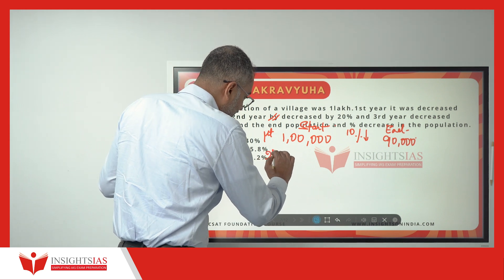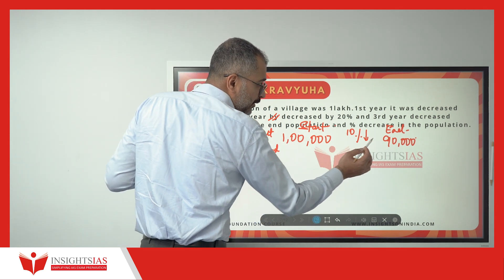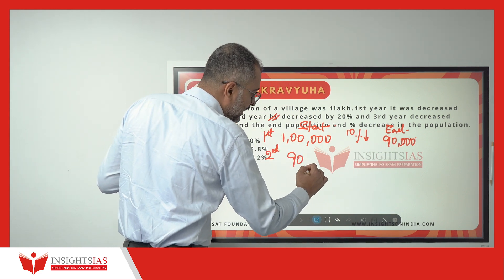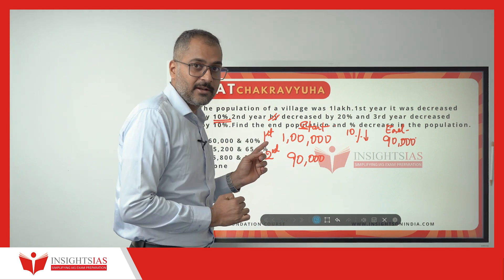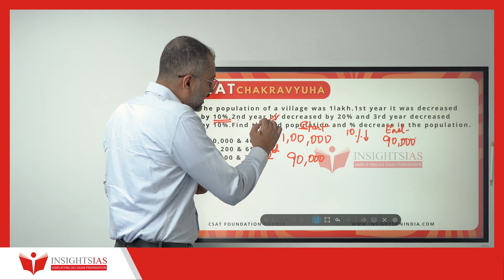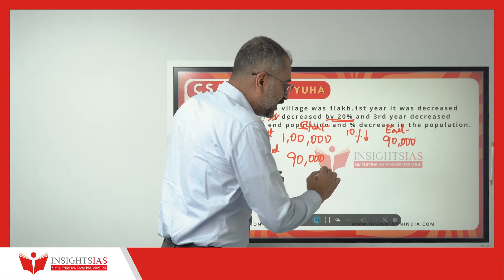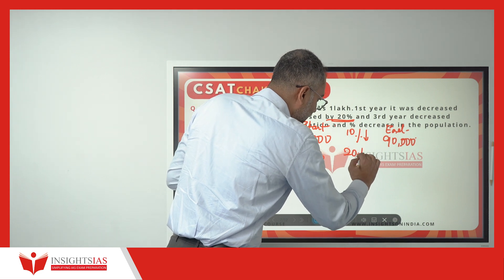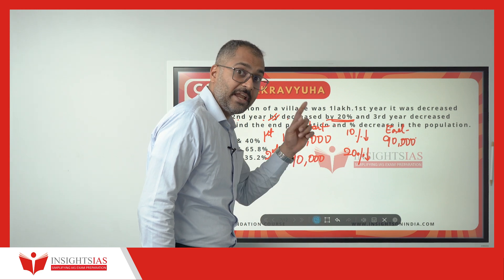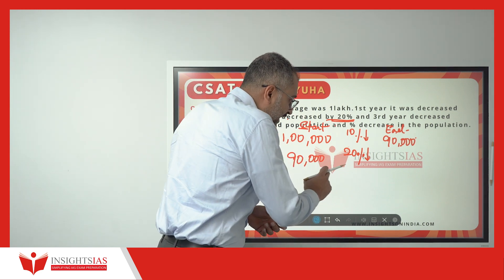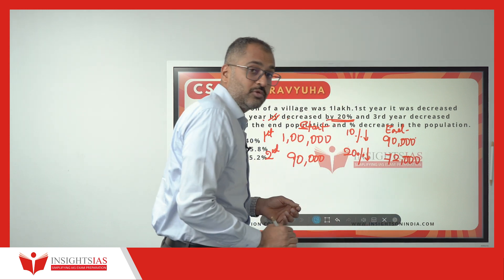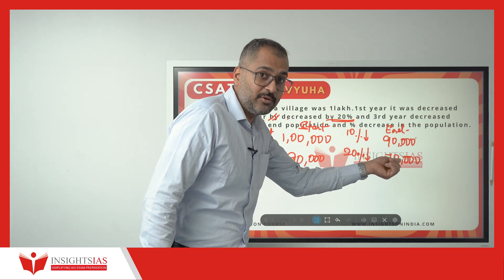The second year starting population is whatever the end population was — 90,000. In this 90,000, the second year population is decreased by 20%. What is 20% of 90,000? 10% is 9,000, so 20% is 18,000. Decreasing 18,000 from 90,000 gives us 72,000. The second year end population is 72,000.